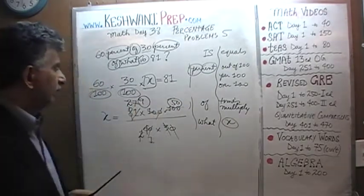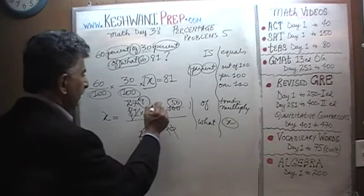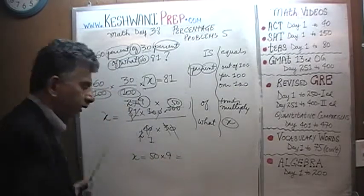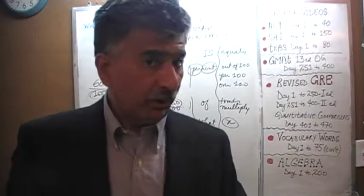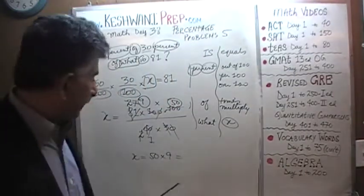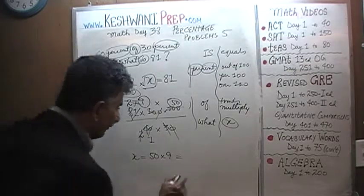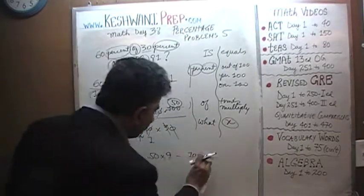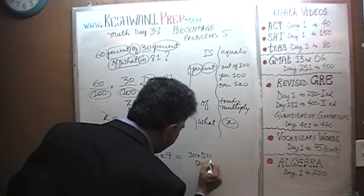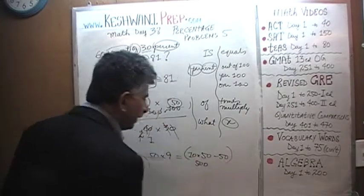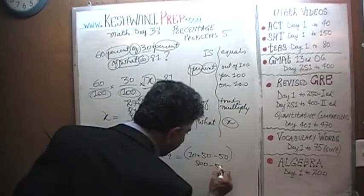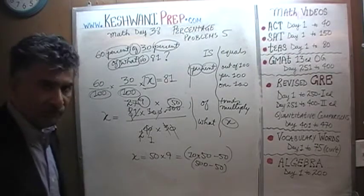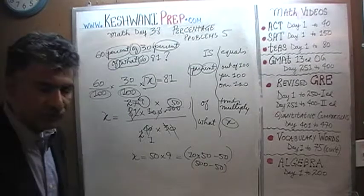We're left with 50 times 9. The final answer is X = 50 × 9. How much is 50 times 9? I know 50 times 10 is 500. If 10 fifties are 500, and we take away one 50, we have 9 fifties: 500 minus 50 is 450. So our final answer is 450.